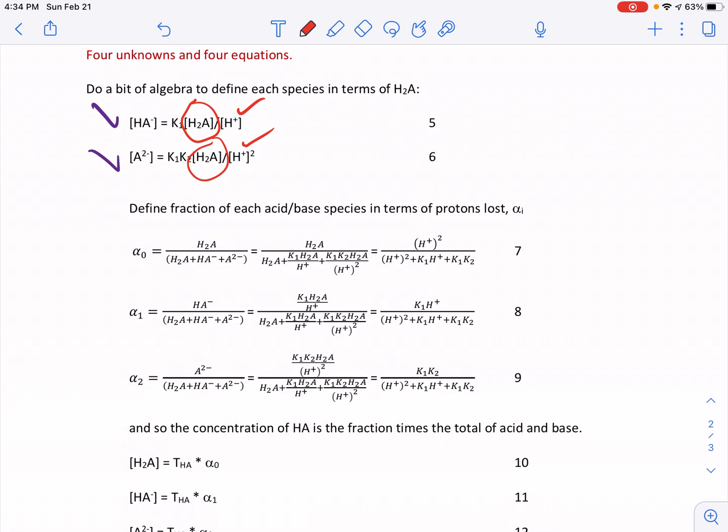So now I'm going to create an expression of alpha I. I'm going to actually create three of those, where I indicates the number of protons lost. So alpha zero is the fraction of undissociated. Alpha one is minus one H+. And then alpha two is two minus H+. Alpha zero, no lost protons. So our chemical species is going to be defined in terms of H2A. Alpha one, we've lost one species, so it's going to be defined in terms of HA-. And alpha two is two species, lost two protons, so it's going to be defined in terms of A2-.